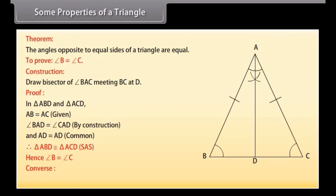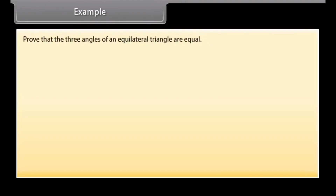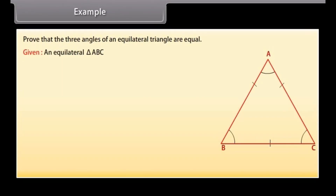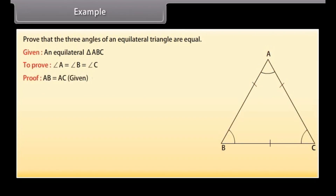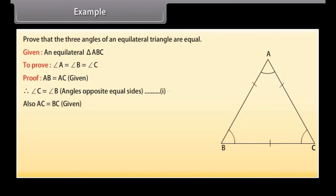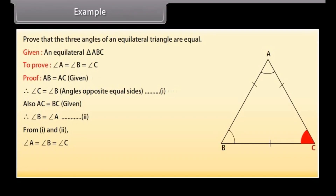The converse of the above theorem is also true, which says that the sides opposite to equal angles of a triangle are equal. Example: prove that the three angles of an equilateral triangle are equal. Given an equilateral triangle ABC, we have to prove that angle A is equal to angle B, which equals angle C. Proof: AB is equal to AC (given), therefore angle C is equal to angle B because angles opposite equal sides are equal — mark it as 1. Also, AC is equal to BC (given), therefore angle B is equal to angle A — mark it as 2. From 1 and 2, angle A is equal to angle B, which is equal to angle C. Hence the result.